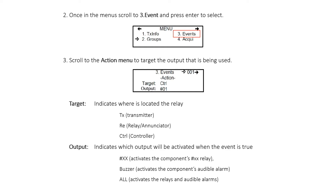Output indicates which output will be activated when the event is true. XX activates the component's XX relay. Buzzer activates the component's audible alarm. All activates the relays and audible alarms.